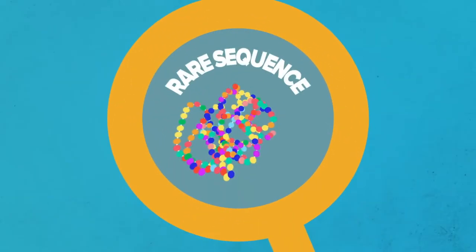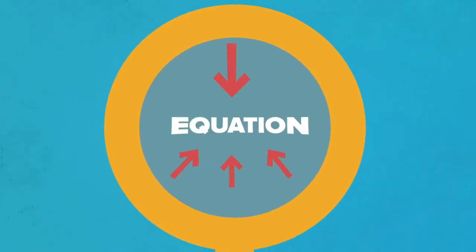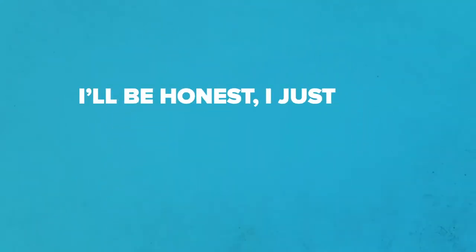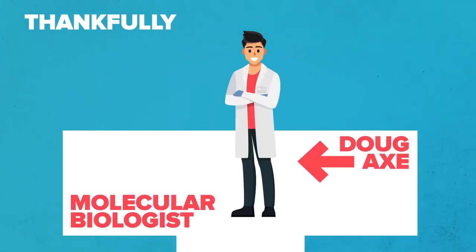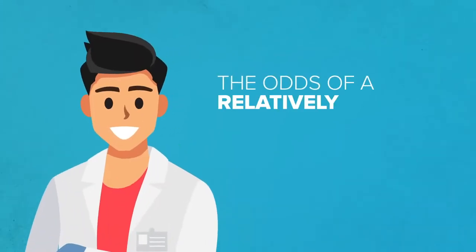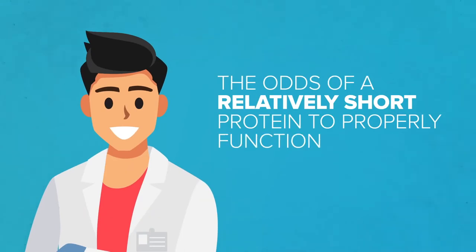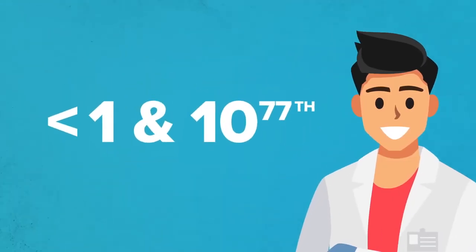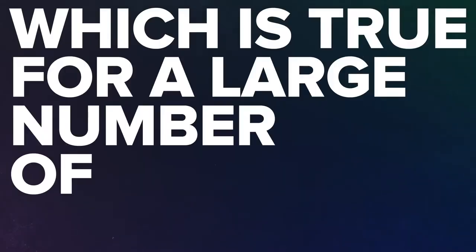But there are other rare sequences that can work, and we would have to factor that into the equation, but I'll be honest, I just don't want to do that. Thankfully, Doug Axe, a molecular biologist, has, and he found that the odds of a relatively short protein to properly function are less than 1 in 10 to the 77th, which is true for a large number of proteins.